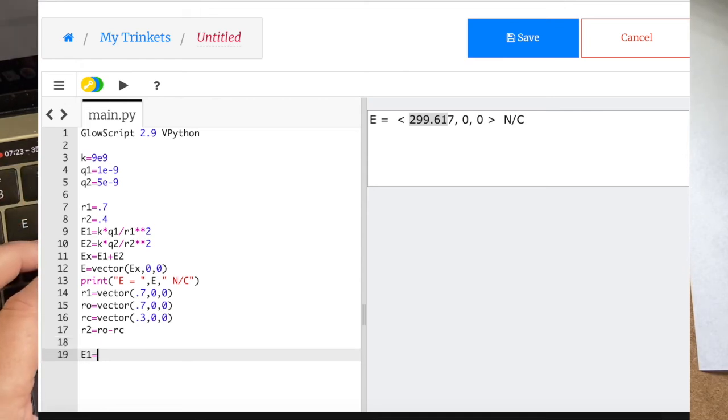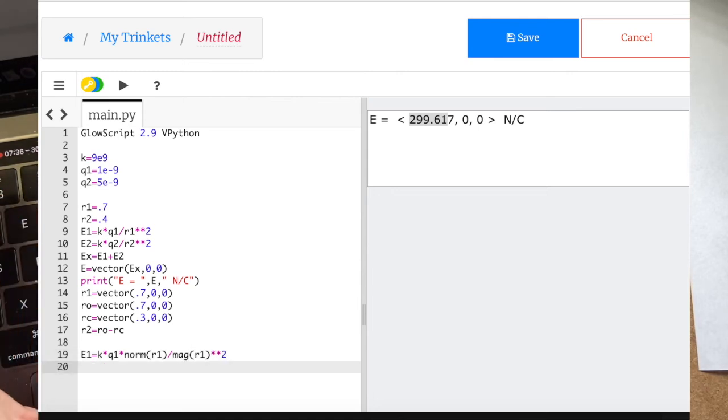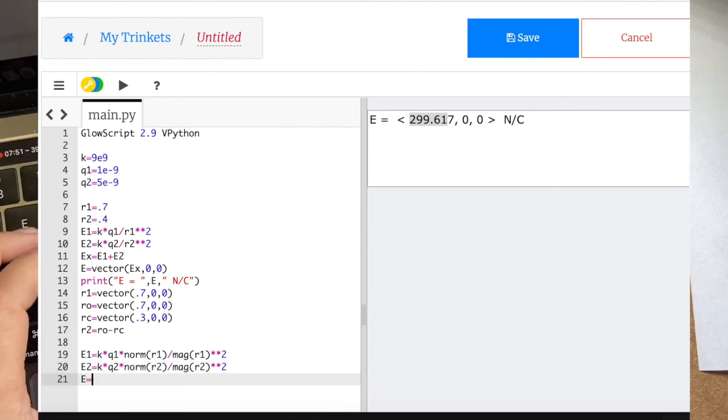And I don't even need to print that. Now I'm going to say E1 is equal to K times Q1 times the unit vector R, which is just norm R1, divided by the magnitude of R1 squared. E2 is the same thing, except with the 2s in there. K times Q2 times norm R2 divided by mag R2 squared.